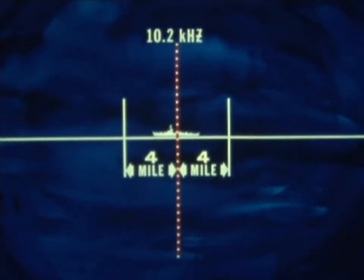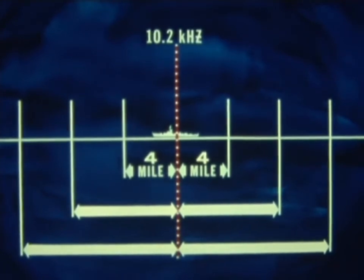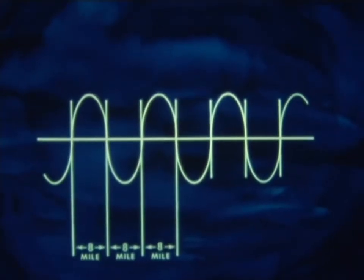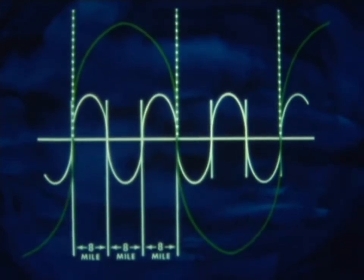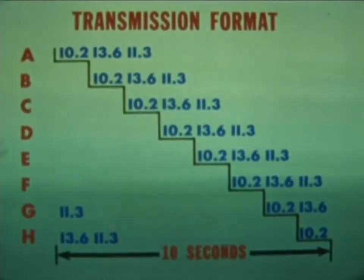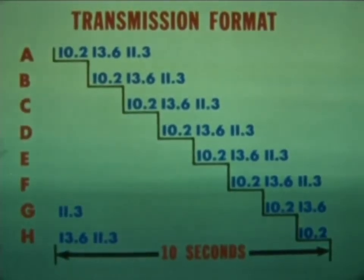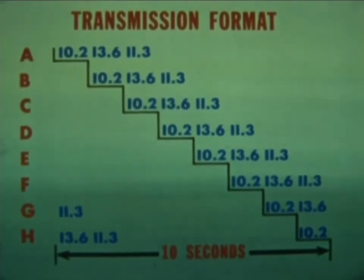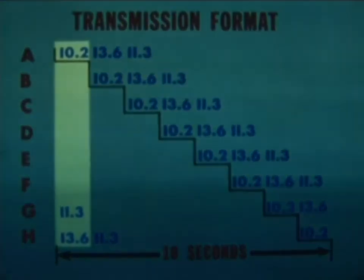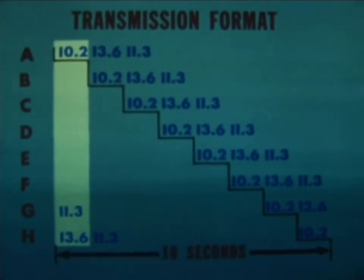Obviously, the whole problem of determining which lane the ship is in could be greatly simplified by making the lanes wider. Since lane width is a function of frequency, we can get the additional area simply by changing the frequency. This is precisely the way the omega system resolves lane ambiguity, by having the stations transmit at frequencies of 13.6 kilohertz and 11 and one-third kilohertz, as well as their basic frequency of 10.2 kilohertz.